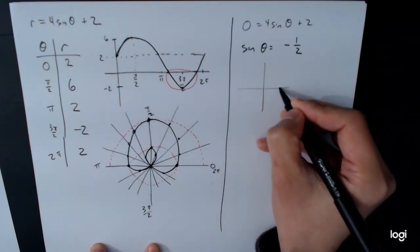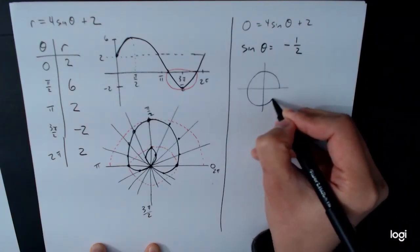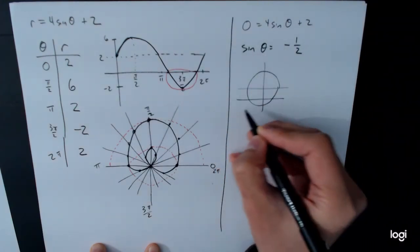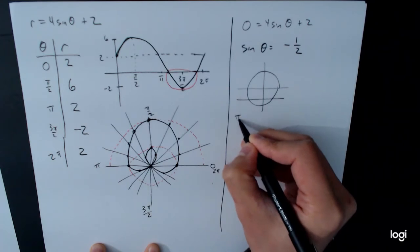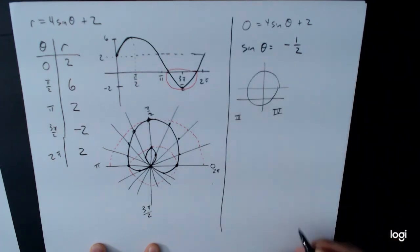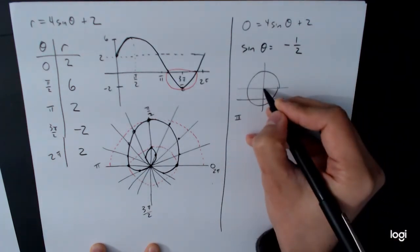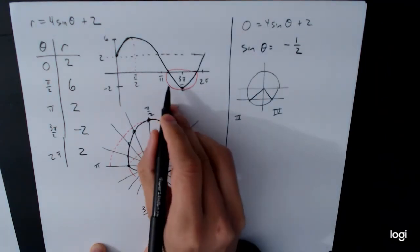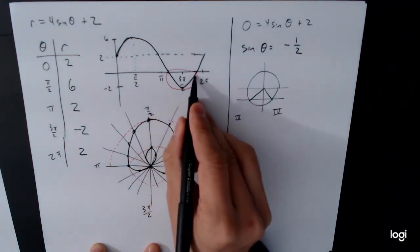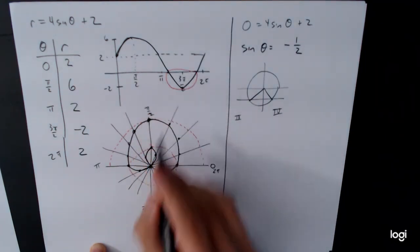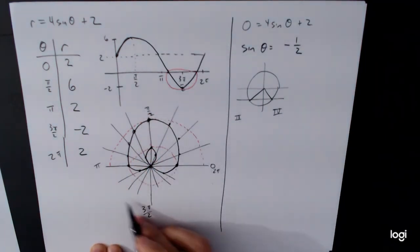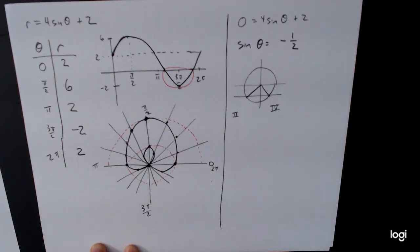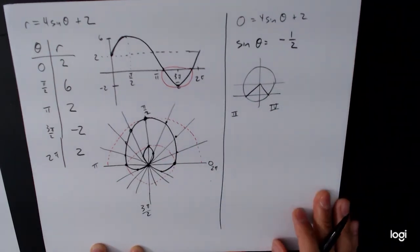Think about the unit circle. Sine corresponds to the y-coordinate, so we're looking at quadrants 3 and 4, where the y-coordinate is negative. Between pi and 3 pi over 2 is quadrant 3, and between 3 pi over 2 and 2 pi is quadrant 4. The reference angle for sine equal to 1 half is pi over 6.